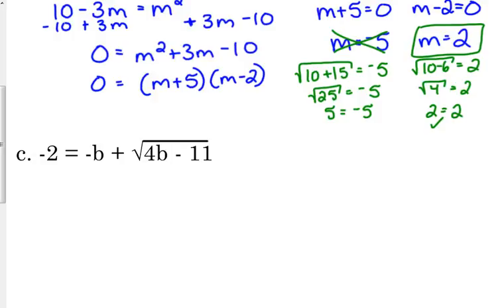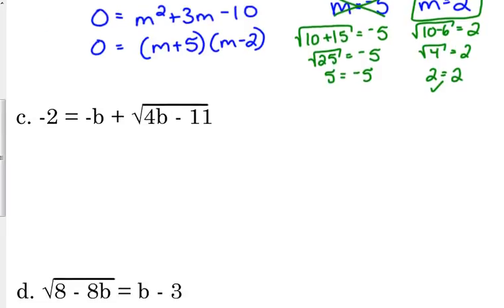Now example C here. Negative 2 is equal to negative b plus the square root of 4b minus 11. A little different. The square root is not isolated. It's got a negative b in front of it. So we need to begin by moving that b to the other side by adding it. So that is going to be b minus 2. We added the b so the b is positive, but the 2 was already negative over there.